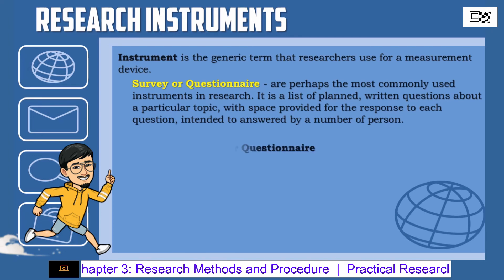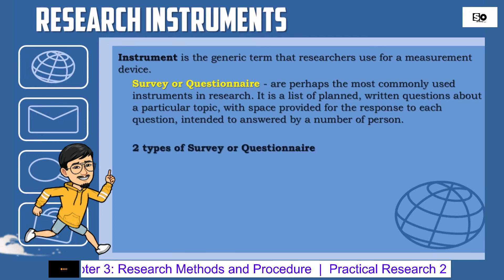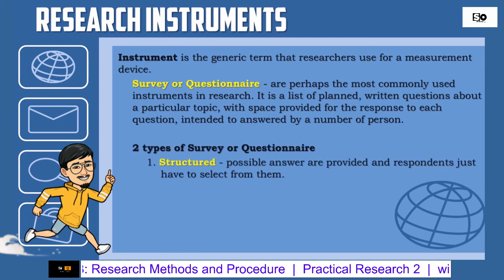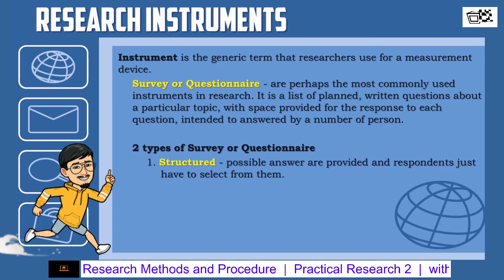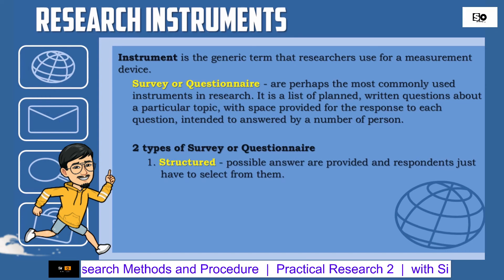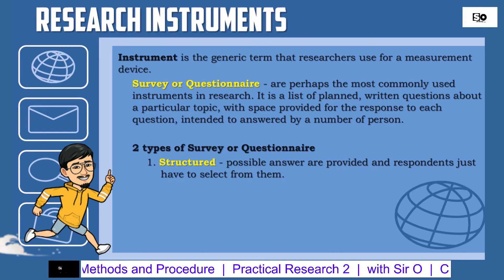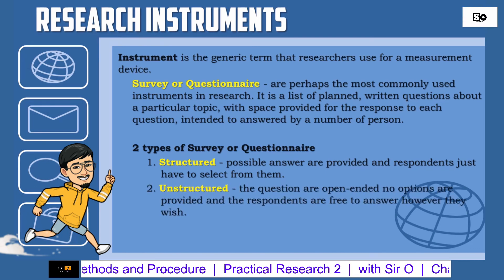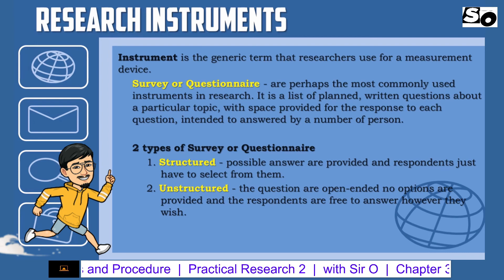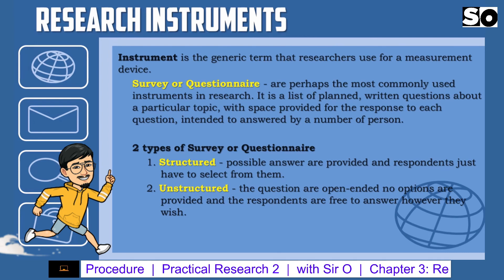Two types of survey or questionnaire. 1. Structured — possible answers are provided and respondents just have to select from them. 2. Unstructured — the questions are open-ended, no options are provided, and the respondents are free to answer however they wish.